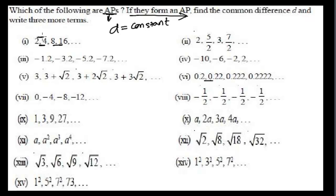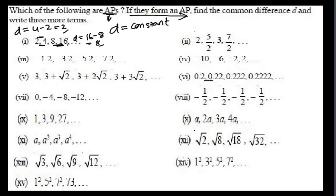Let me find out for the first sequence. In an arithmetic progression, we take the second term minus the first term. So second term is 4 and first term is 2, giving 4 minus 2 equals 2. Now, 16 minus 8 equals 8. Since we get two different common differences, the common difference is not constant, so this is not an arithmetic progression.